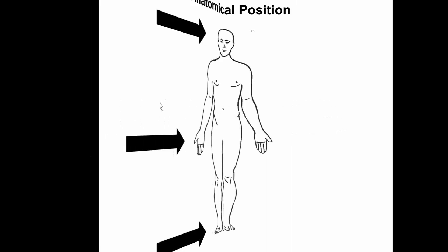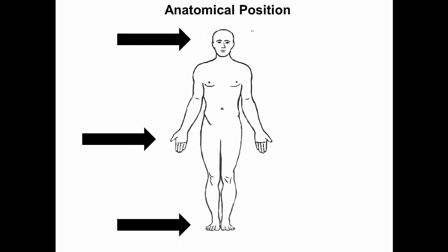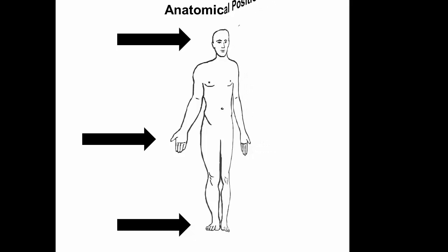The anatomical position is with the body erect, the head, eyes, and toes directed forward. The upper limbs are at the side with the palms of the hands facing forward, and the lower limbs are close together. All anatomical descriptions are expressed in relation to this one consistent position, thus ensuring descriptions are not ambiguous.